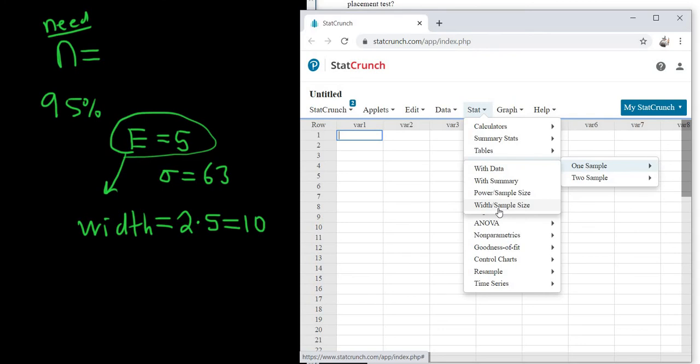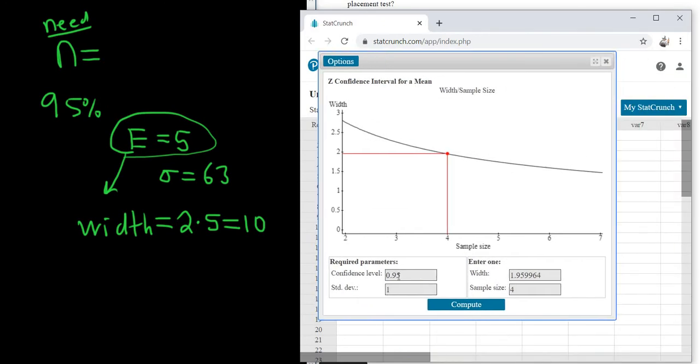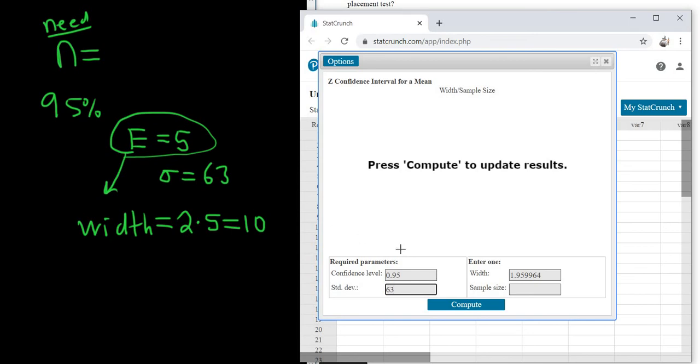Width, sample size. Because we're looking for the sample size and we have the width. And then here we just enter everything. So the level is 95. The standard deviation is 63. And then we said the width was 10. Everything looks good. Click Compute.